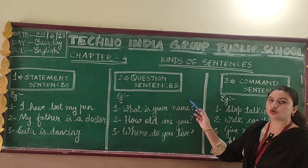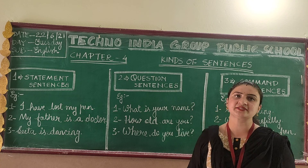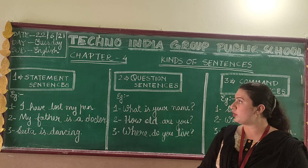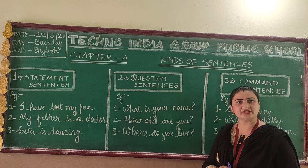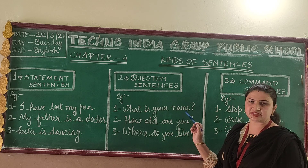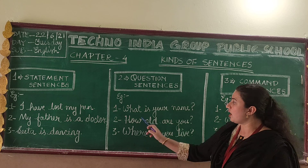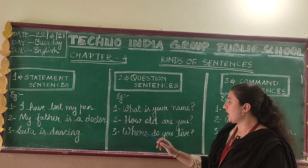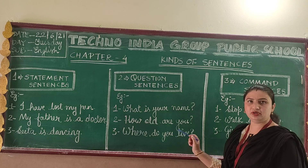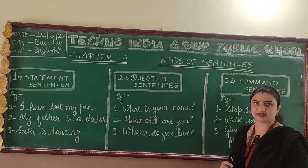Second is question sentence. In a question sentence we ask some question or we ask some doubts, so these types of sentences are called question sentences. These sentences end with a question mark. For example: What is your name? How old are you? Where did you live? These are some examples of question sentences.